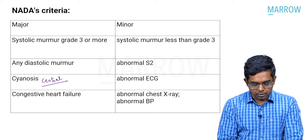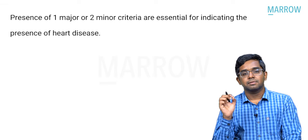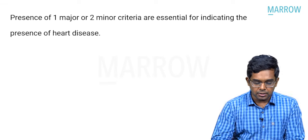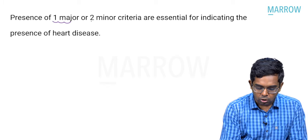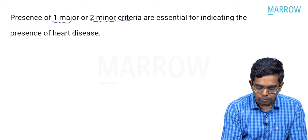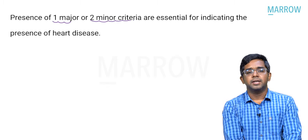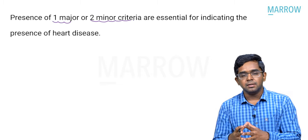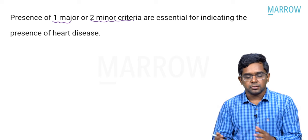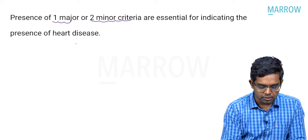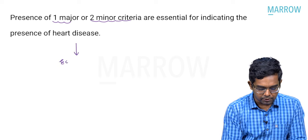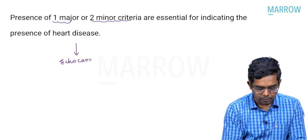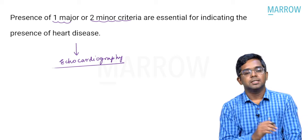To make a clinical diagnosis of congenital heart disease, you should have at least one major criterion, or two minor criteria, indicating the presence of congenital heart disease. If this is satisfied, then you have to go for the next investigation — echocardiography — which would be the final investigation for diagnosis of congenital heart disease.